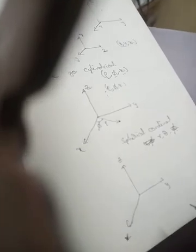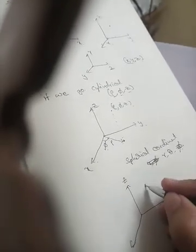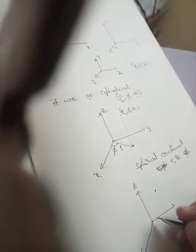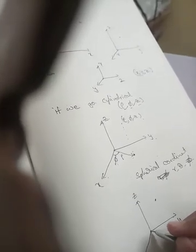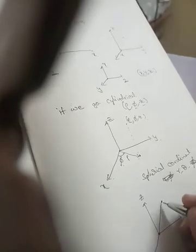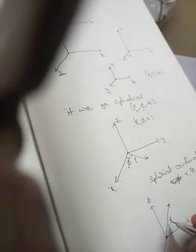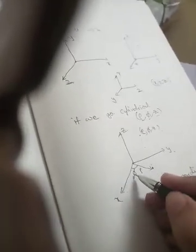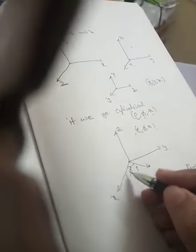Suppose if this is Z, this is Y, this is X, then if a point is here, then r is radial distance from origin to the point itself. This is r.